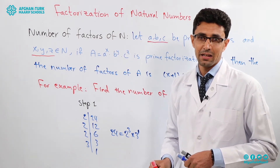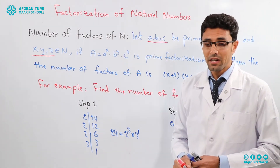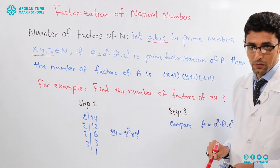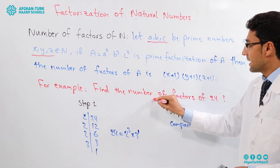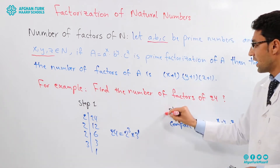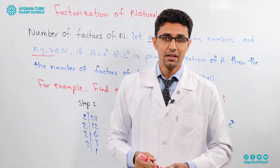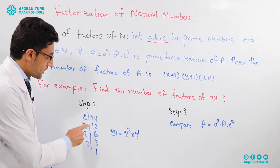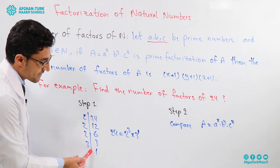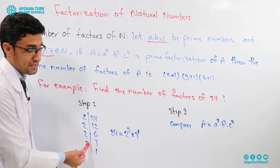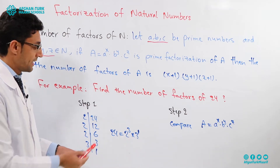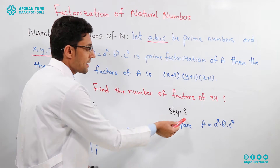In order to understand it better, let's find the number of factors of 24. Example: find the number of factors of 24. There are two steps. Step 1: we factorize 24. 24 is equal to 2 to the power of 3 multiplied by 3 to the power of 1.